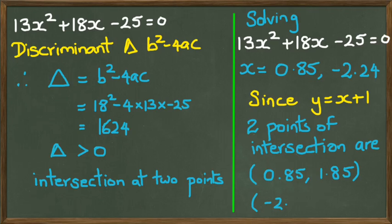And the other intersection point is negative 2.24. I just realized I made a mistake. That should be negative 1.24. So those are your two points for the equation here.